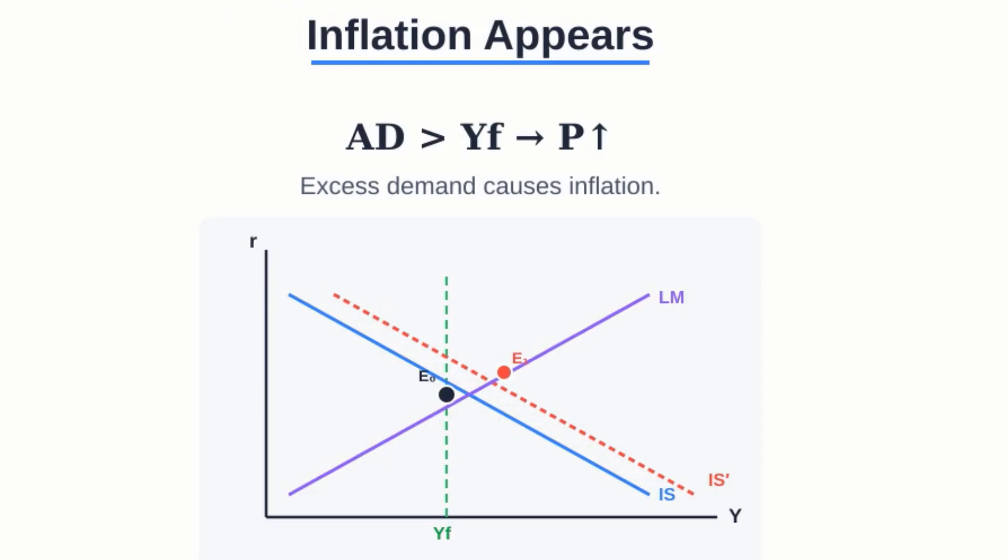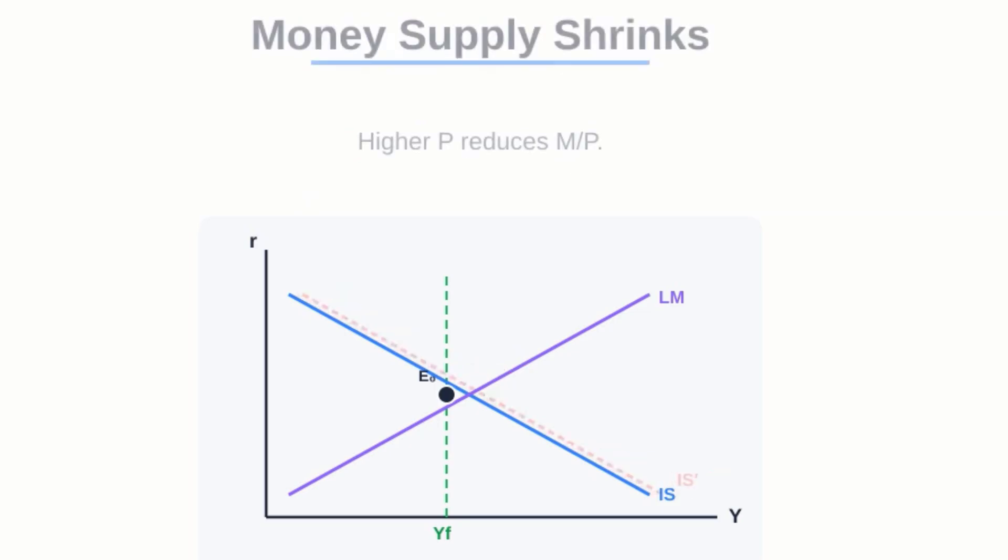The economy does end up settling back down to its original output level, but—and this is a big but—interest rates are now way higher than they were before.